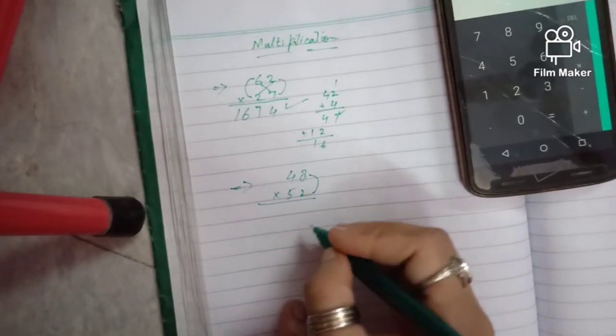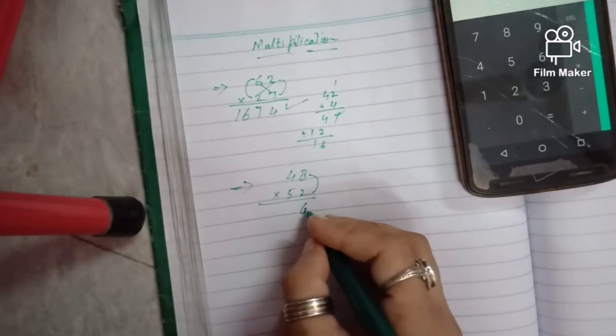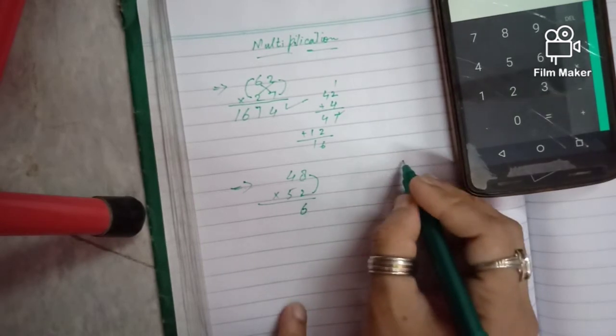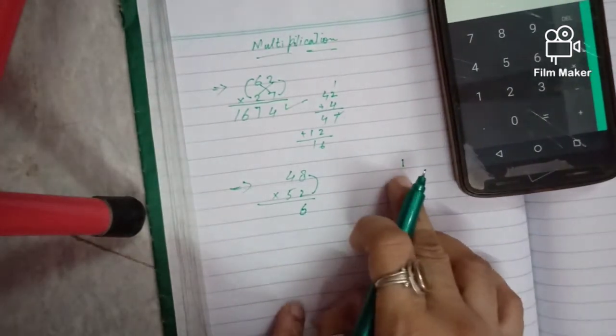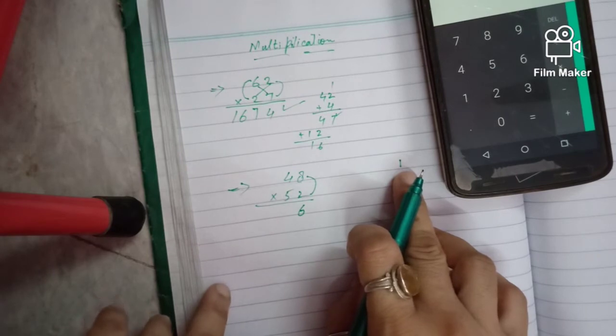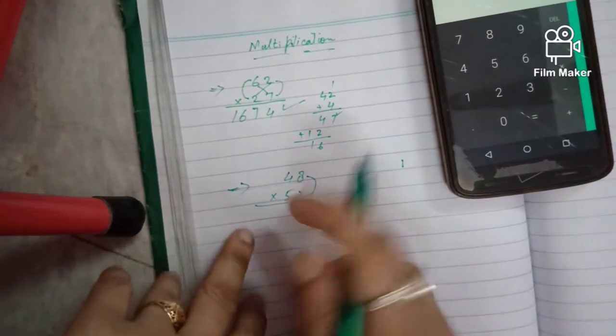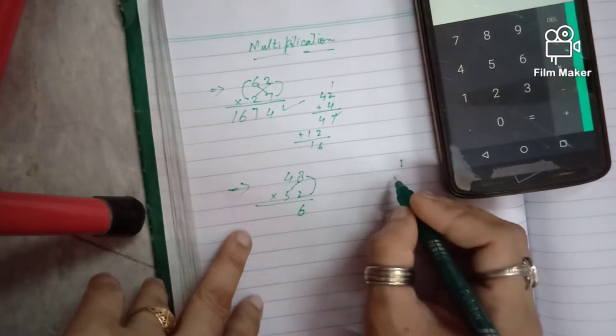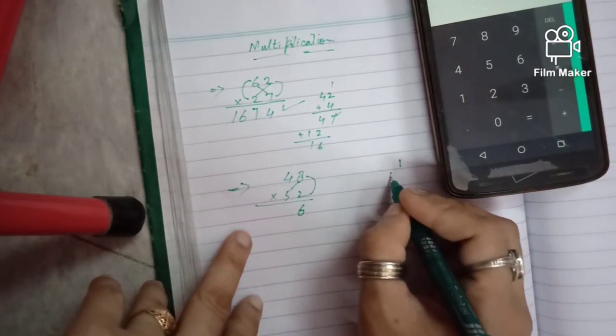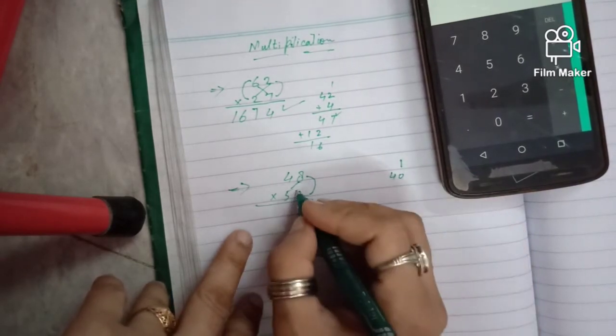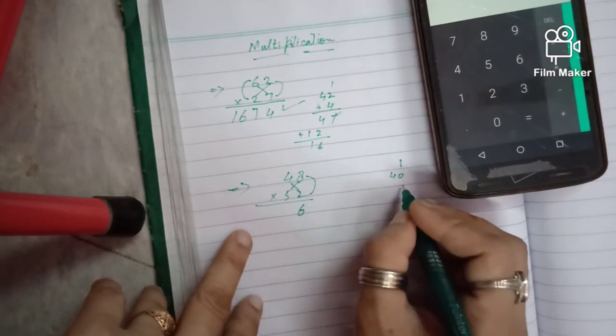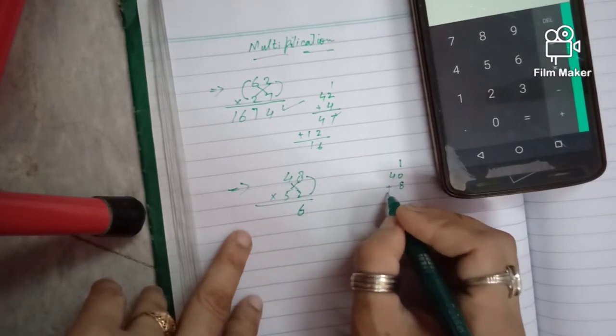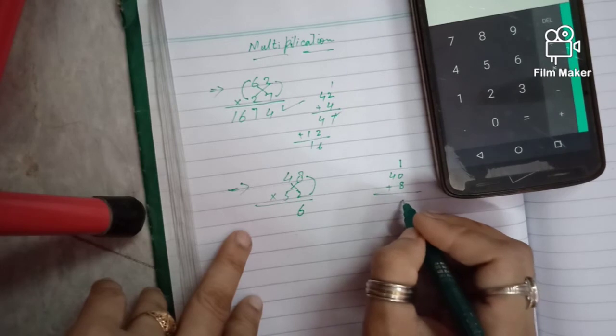8 times 2 equals 16. Now cross multiply. 4 times 2 is 8, and 5 times 8 is 40. Now sum these digits. 8 plus...